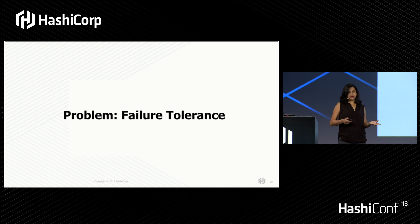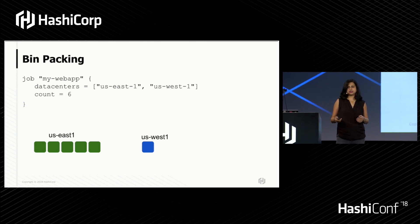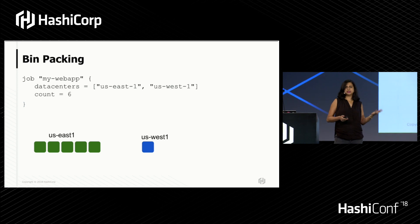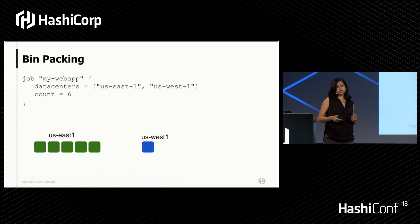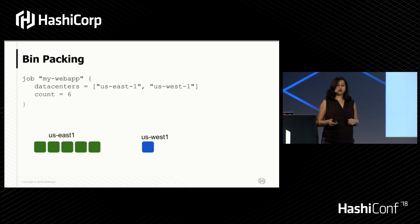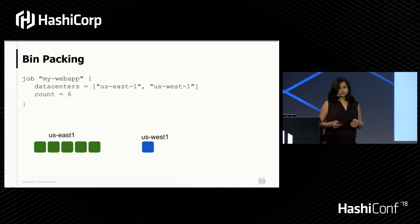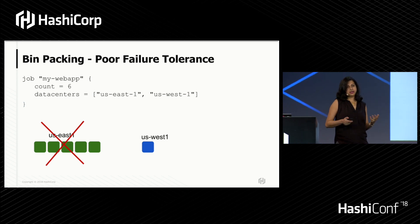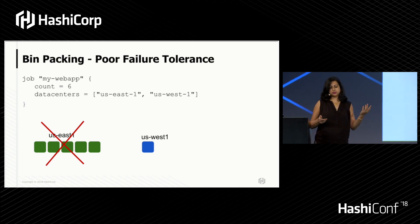There are some issues with bin packing around failure tolerance. Let's take a simple example: you've got a business-critical web app you want to run on two data centers, US East 1 and US West 1, with six instances. Nomad's bin packing algorithm prior to 0.9 is purely looking at resource utilization, so it could place five instances on US East 1 and one on US West 1. If you have a data center level failure and US East 1 goes out, you can't route traffic to those machines, and now a single instance has to handle all your traffic — it might topple over from a thundering herd of requests.